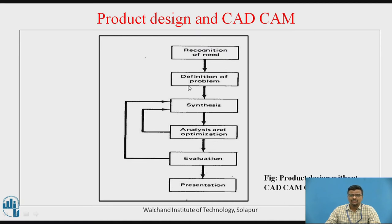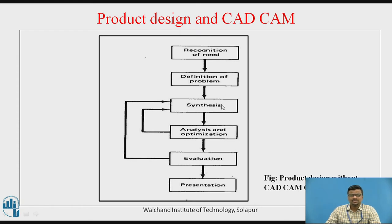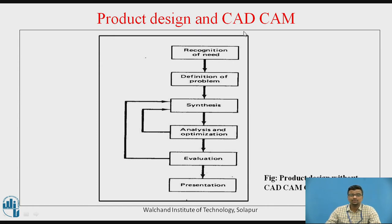After recognizing the need, the next step is the definition of the problem: how the product will look, how the design will look, what the dimensions are, and what material to use during manufacturing. Then there is synthesis — in manual product design, this means creating orthographic drawings and isometric drawings without any CAD software. This is product design without CAD/CAM, which is very hectic work for design people, requiring 2D sketches, isometric drawings, and perspective drawings.